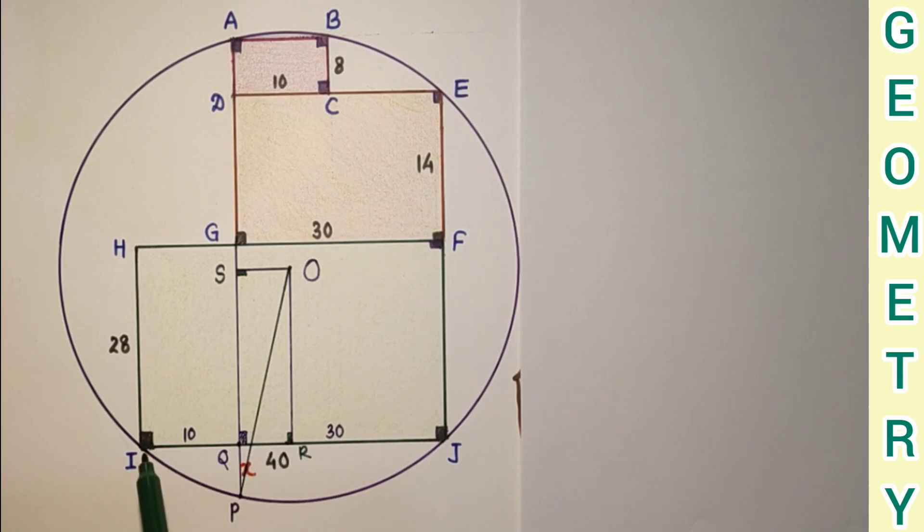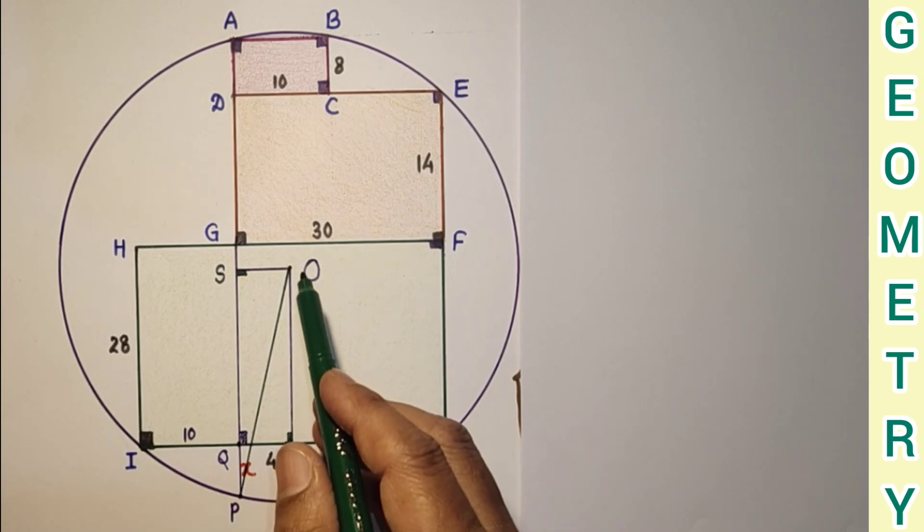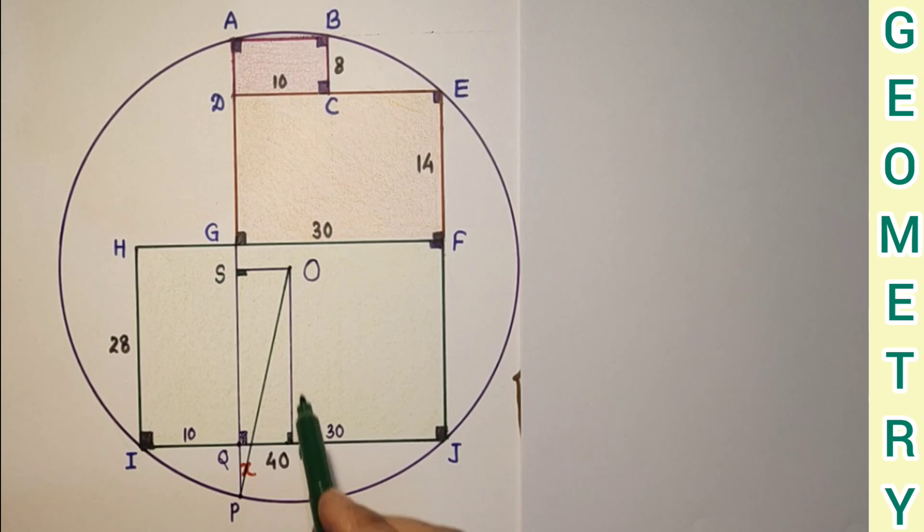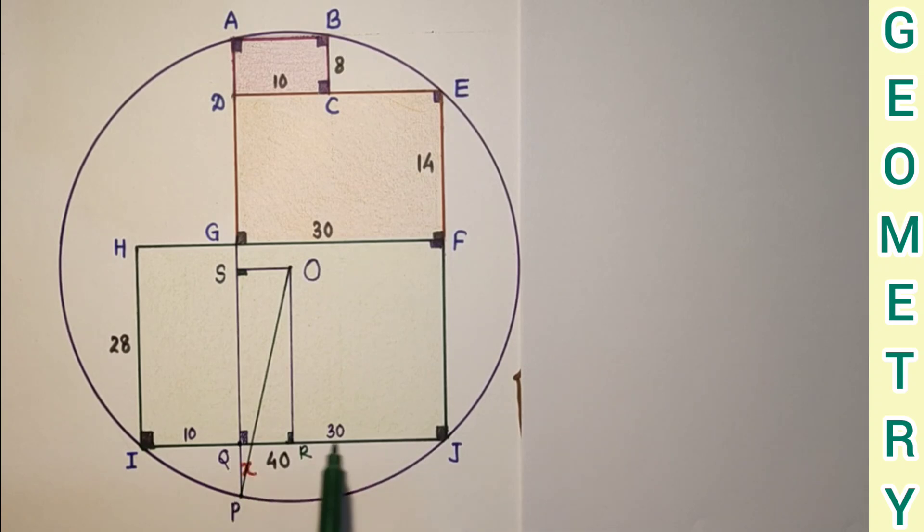But this IJ, since this OR is perpendicular drawn from the center, this chord is bisected. The length of IJ is 40, so half of IJ is 20. So from I to R, IR is 20, but this part is 10. Since IJ is 40 and this QJ is 30, so IQ is 10.